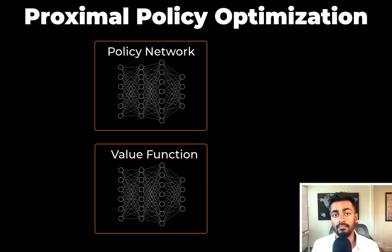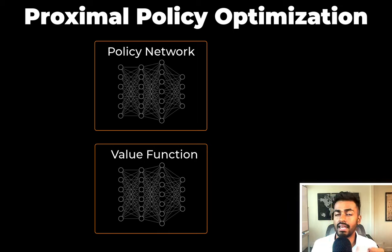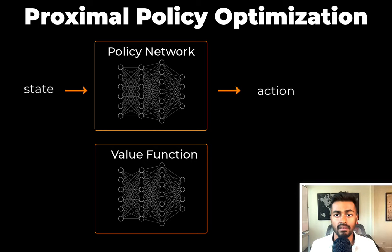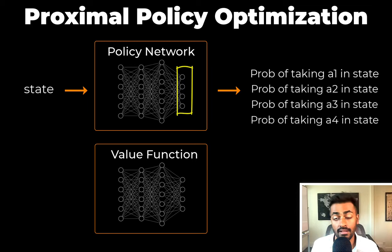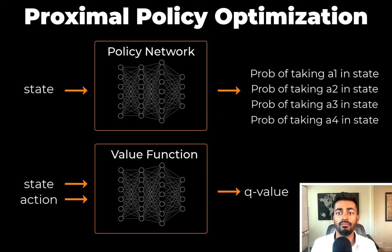The PPO algorithm makes use of two main architectures: a policy network and a value function network. They are both neural networks that take an input and return an output. The policy network takes a state as input and produces an action as output. From an architecture standpoint, the output layer has a number of neurons equal to the number of possible actions, and each neuron holds a probability that a specific action is taken when the agent is in the input state. The value function takes a state and an action as input and outputs a real number — a Q value — that quantifies how good that decision was.